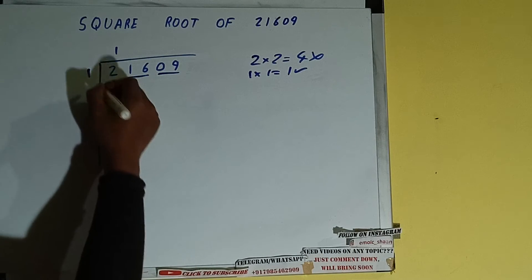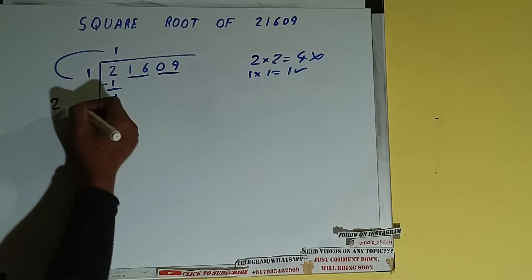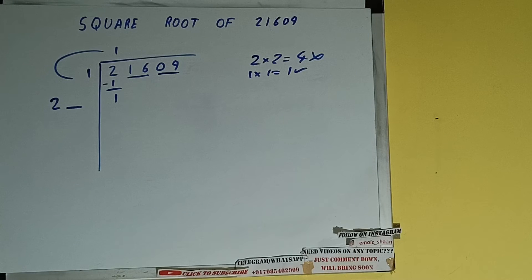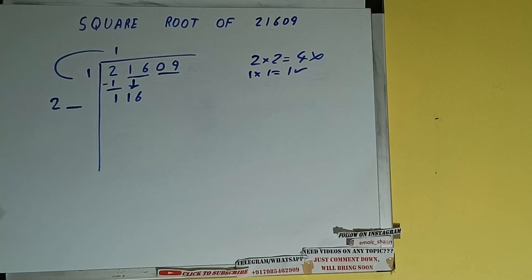1 subtract 1 will be left. We did 1 into 1, so add both. So 1 plus 1 will be 2. Write it here and keep a digit extra, and this number we need to make it big. So bring the next pair down and it will be 116. Now whatever number we write here we need to write here also.